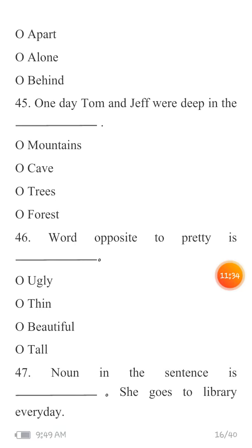MCQ 46: Word opposite to 'pretty' — pretty ka opposite kya hai? Your options are: ugly, thin, beautiful, or tall. MCQ 47: Noun in the sentence — the sentence is 'She goes to the library every day.' What is the name/noun in this sentence? Your options are: library, everyday, she, and goes.